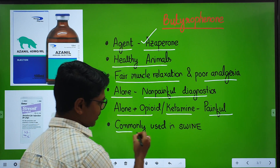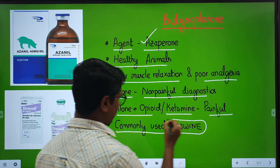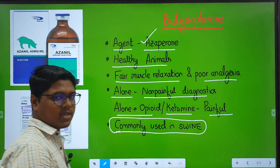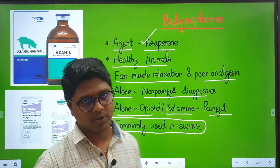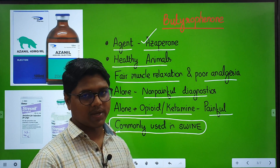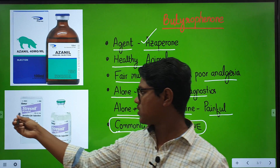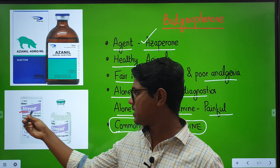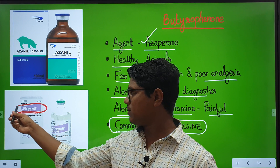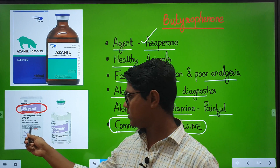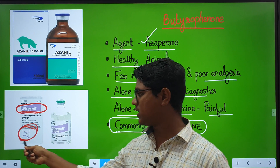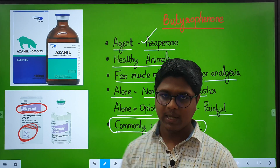Remember this: butyrophenones are the common sedative used for swine. Phenothiazines are basically for dog, cat, and horse, while this group is for swine. The injection which comes as Stresnil — this is a famous name — is given for pigs. This is a very common sedative used in pigs.